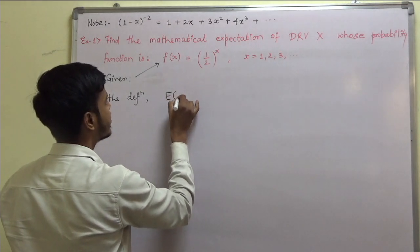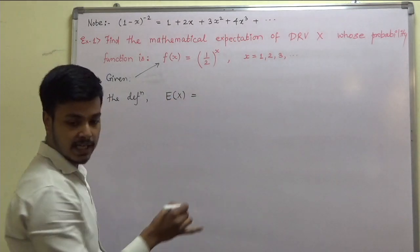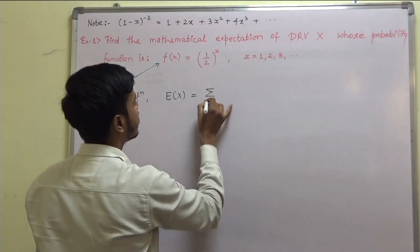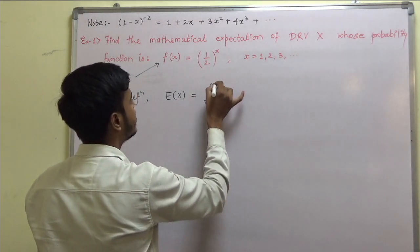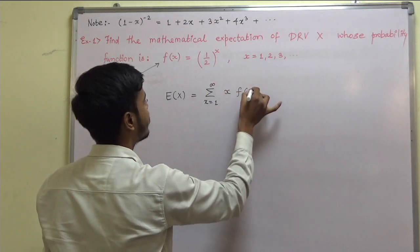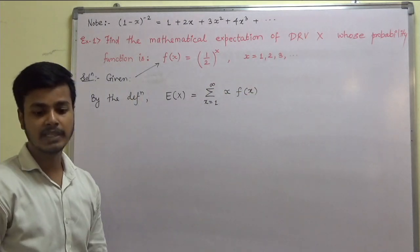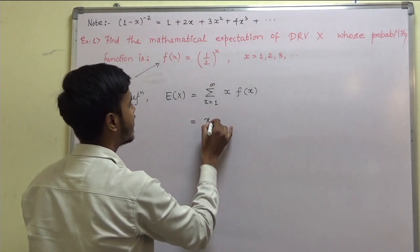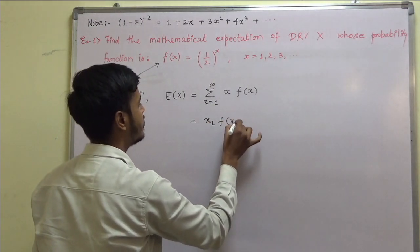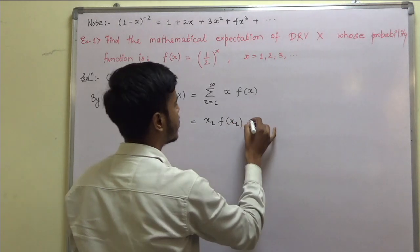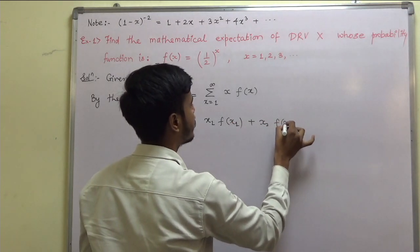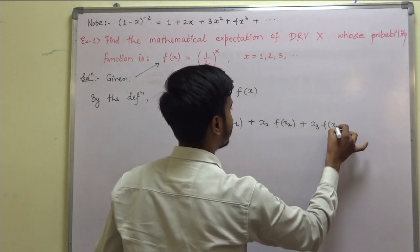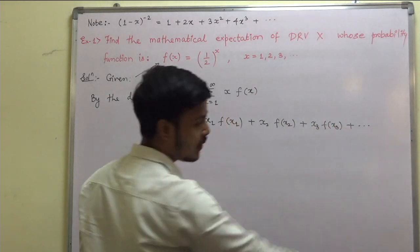By the definition, the mathematical expectation of x is equal to summation from x equal to 1 to infinity of x into f of x. So we substitute to get x1 times f of x1, plus x2 times f of x2, plus x3 times f of x3, and so on.